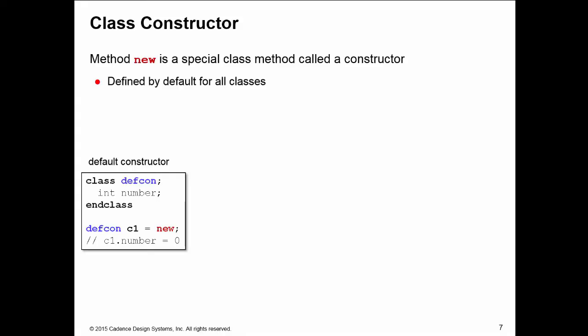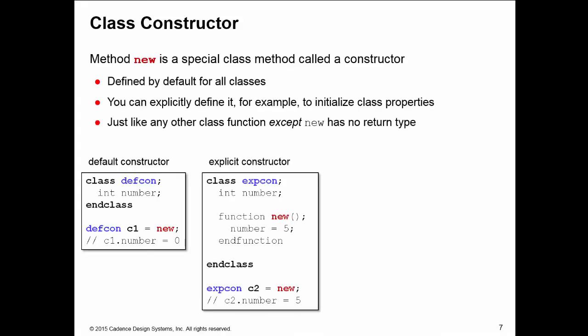You may want to initialize the property for a particular instance of your class. We could explicitly define the constructor to initialize our class property. When we do this, the class function new looks like any other class function except it does not have a return type. It's not even allowed to have a void value as the return type. The constructor of a class is called new, it's a function, it does not have a return type.